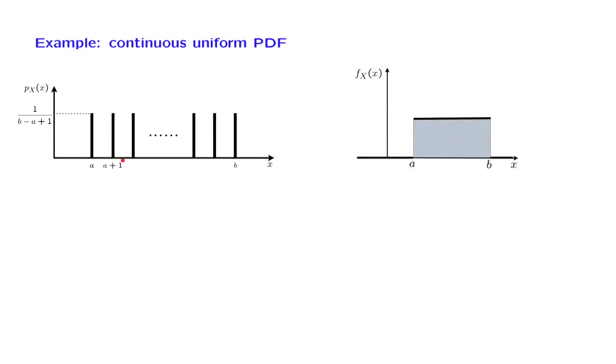In the discrete case, these values were equally likely. In the continuous case, at all points, we have the same height for the probability density function. And as a consequence, if we take two intervals that have the same length, then these two intervals will be assigned the same probability.